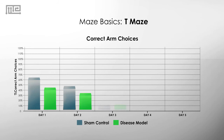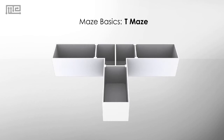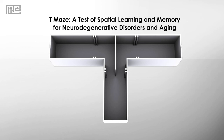Typically, a mouse can remember which arm they previously entered, but in disease models and aged mice, the aptitude to remember decreases and the number of incorrect choices increases.